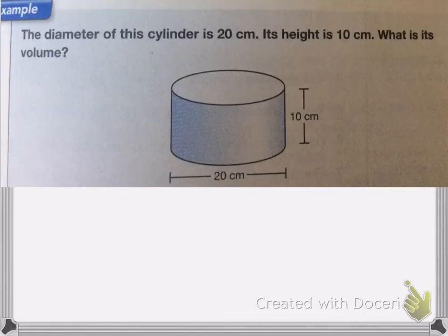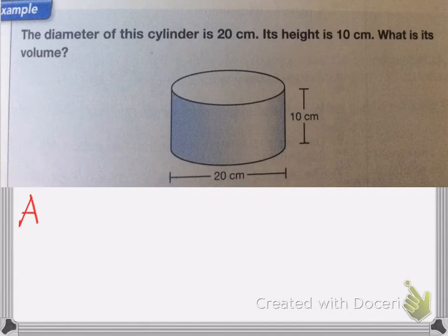On this one, the diameter of the cylinder is 20 centimeters and its height is 10 centimeters. What is the volume? First we need to find out what the area of the circle is. The area of a circle is equal to pi r squared.